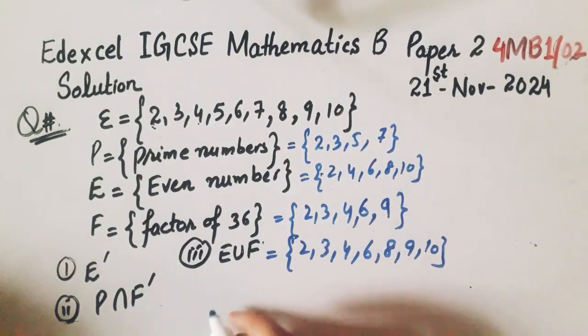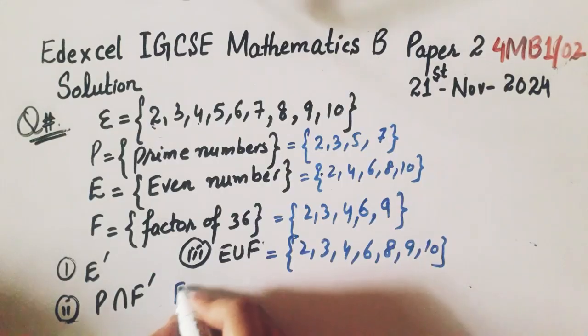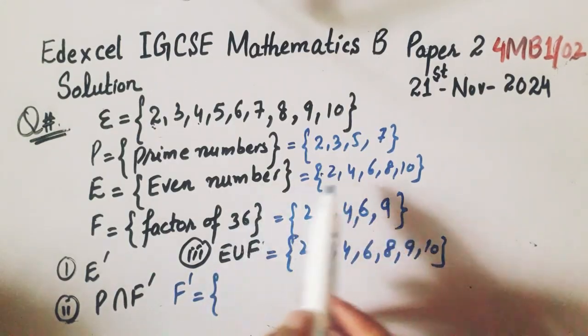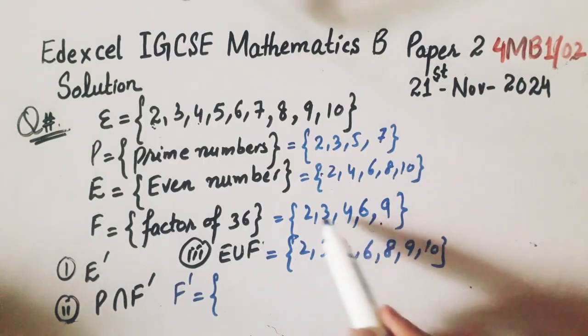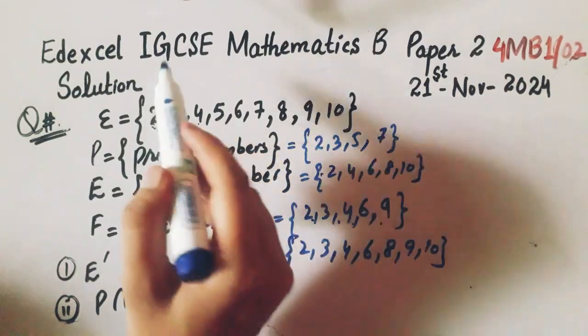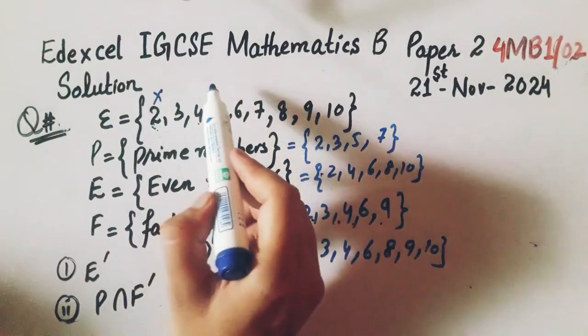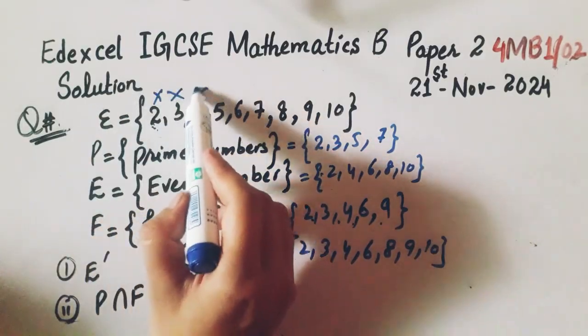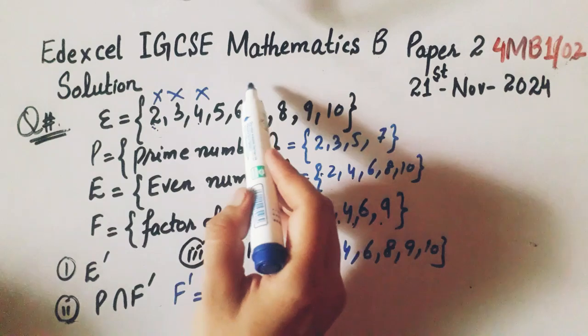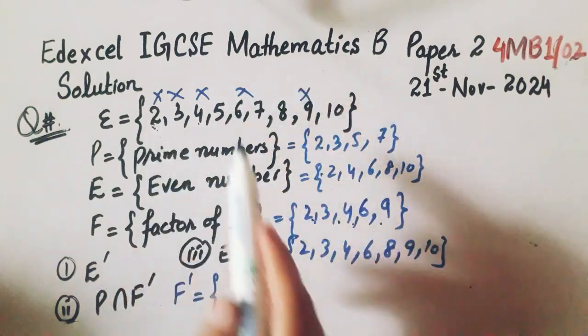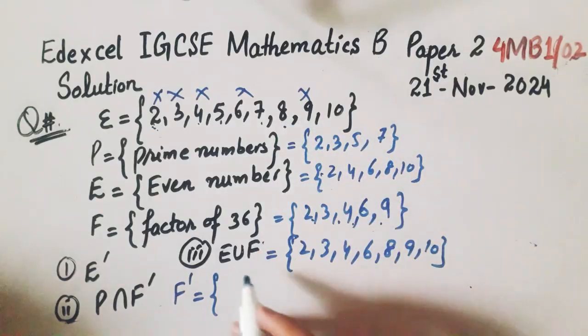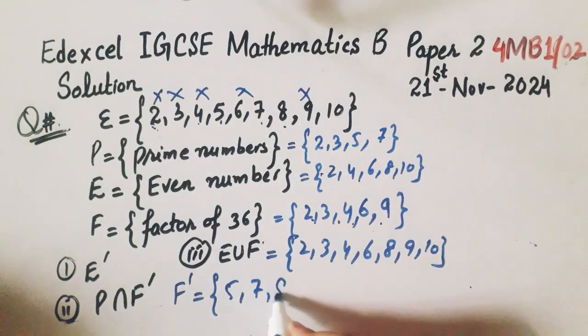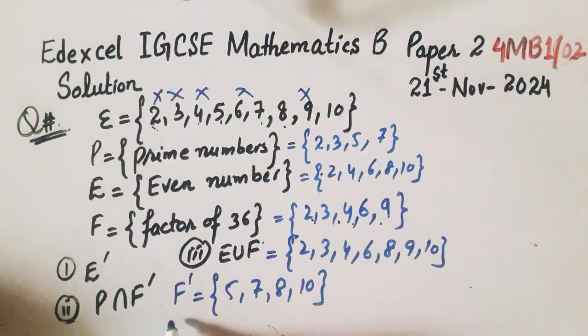Now the third one is P intersection F complement. First of all we will find the F complement means universal minus F. So F has the factors of 36: 2, 3, 4, 6, 9. These are not included. So F complement has 5, 7, 8, and 10.